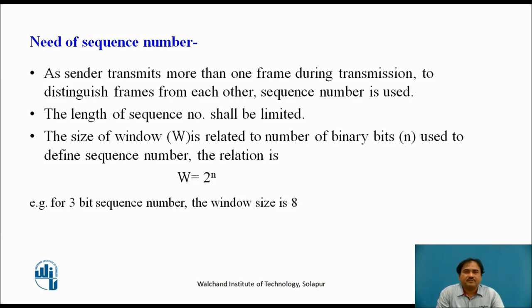Now what is the need of sequence numbers? In the sliding window flow control, the sender is allowed to send more than one frame on a channel without waiting for feedback. Hence, to distinguish every frame from each other, we expect some sequence number to be inserted. This number also helps the receiver to provide specific feedback for the frame it receives. When we choose the sequence number, we must be careful that its length should be very small — it doesn't consume much space in the frame. We use binary bits to specify sequence numbers, so the size of window is defined as 2 raised to n. That is, for a 3-bit sequence number, the window size is 8.